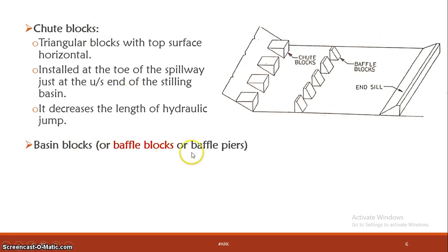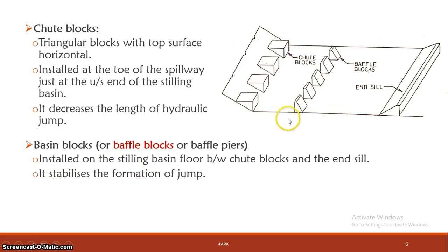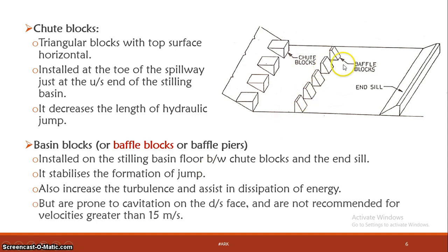The next accessory is the basin blocks, also called baffle blocks or baffle piers. They are located between the chute blocks and the end sills. Their function is to stabilize the formation of the jump, increase turbulence, and assist in the dissipation of energy. However, at high velocity flow, there is a chance of cavitation, which can cause structural damage. Therefore, baffle blocks are not used when the velocity exceeds 15 meters per second.